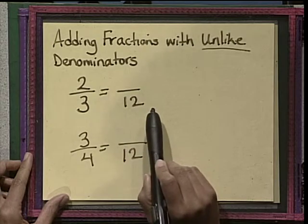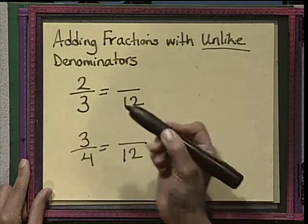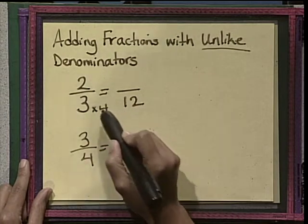3 times what number gives you 12? That's something to think about. Well, we know that we went ahead and multiplied 3 times 4. So 3 times 4 equals 12.